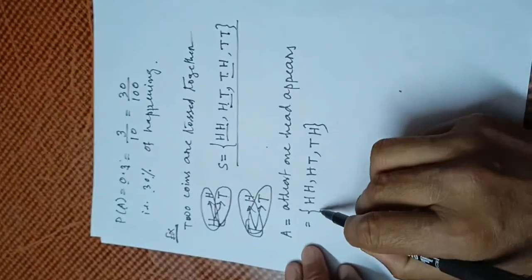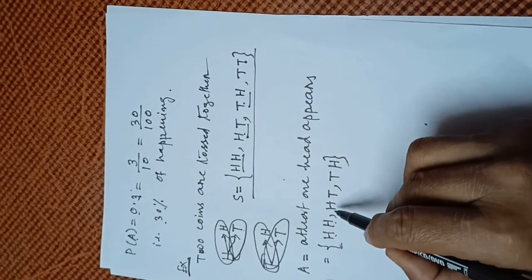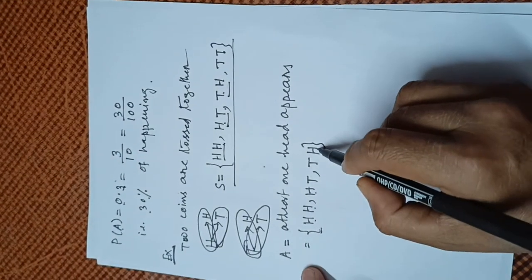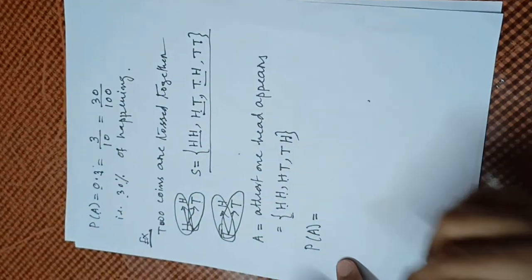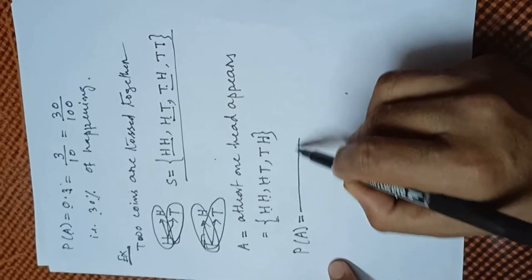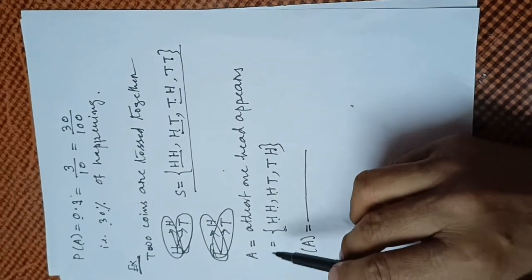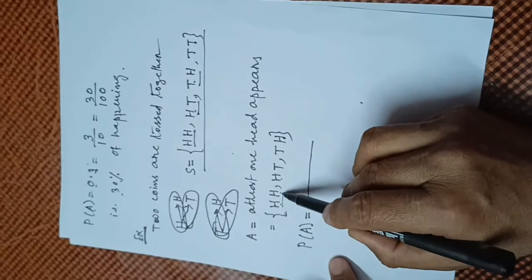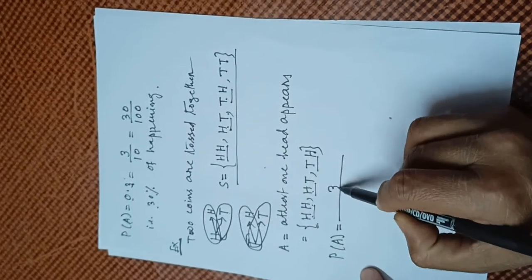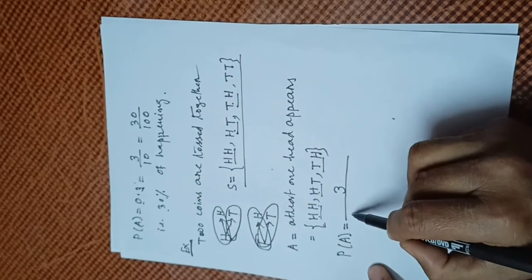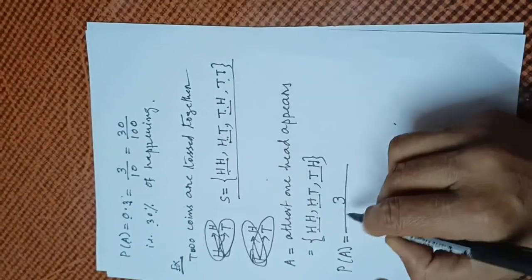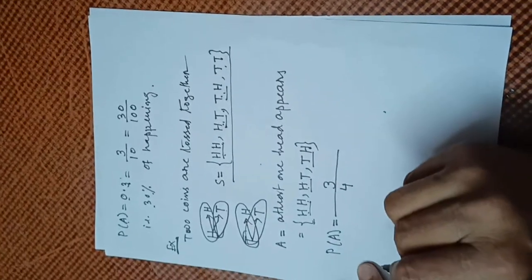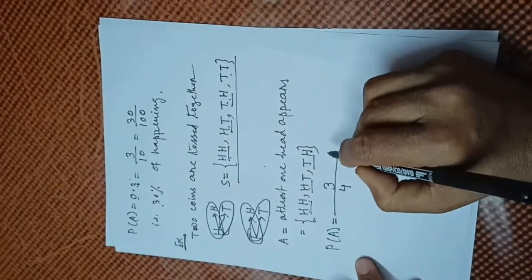So event A = {HH, HT, TH}. The probability of A is: number of elements in event A is 3, and total number of elements in the sample space is 4. So the probability is 3/4.